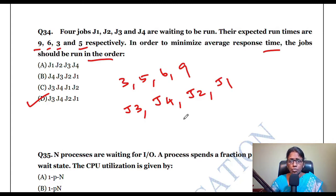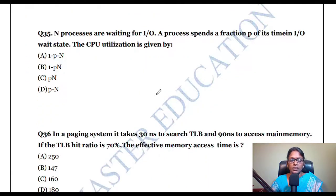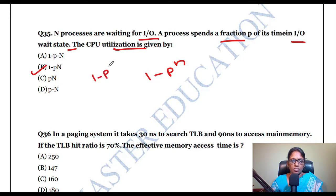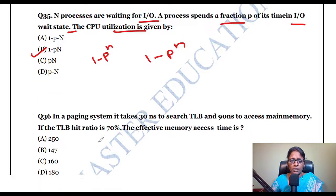N processes are waiting for I/O; a processor spends a fraction P of its time in I/O wait. The CPU utilization will be 1 minus P to the power N.